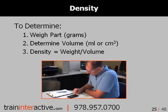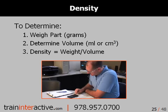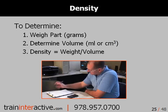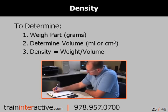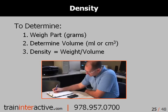When determining the density of a part, first weigh the part. Second, determine the volume of the part. This is usually done by water displacement. You should have an accurate fluid measurement device, such as a beaker. Keep in mind, you may need a larger beaker if the parts need to be rotated to remove any bubbles.